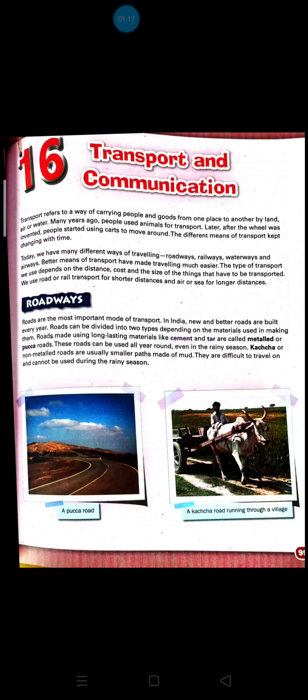There are four ways of transportation. The first way is roadways, second is railways, third is waterways, and fourth is airways. For roadways, you travel with the help of a bicycle, personal vehicles, or public transport like buses. For railways, you travel with the help of trains — metro trains or normal trains. For waterways, you travel with ships and boats. For airways, you travel with aeroplanes.